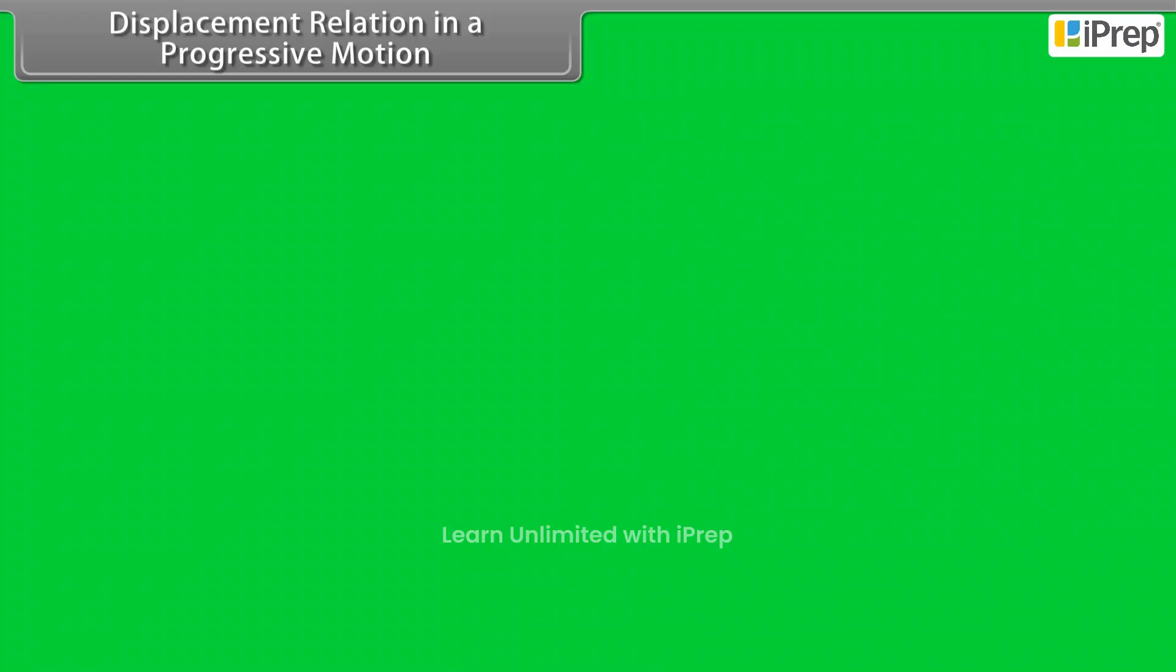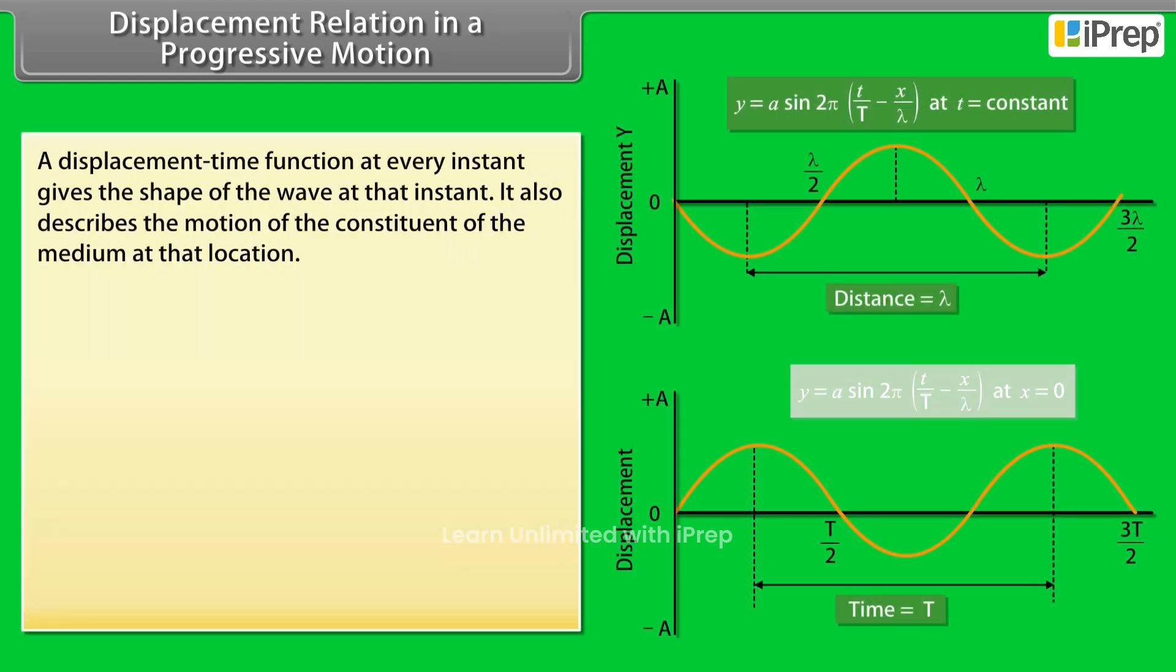Displacement relation in a progressive motion. A displacement-time function at every instant gives the shape of the wave at that instant. It also describes the motion of the constituent of the medium at that location. A sinusoidal traveling wave is then described by: